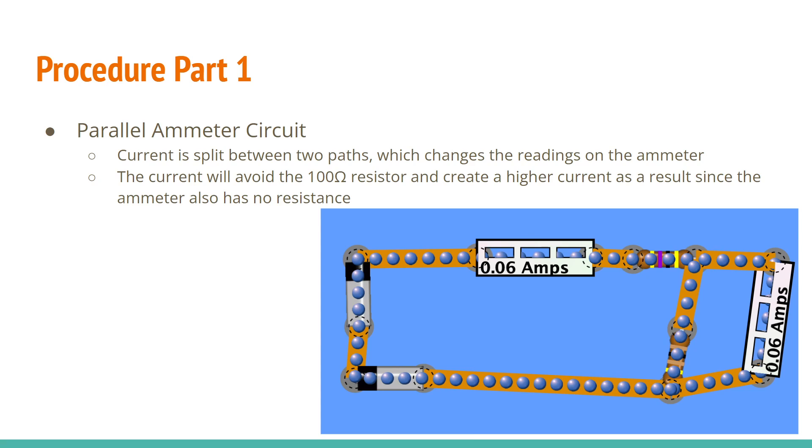The next part called for a parallel ammeter circuit. And so since the current is split between two paths, the ammeter shows a different reading. However, since there is a path to the ammeter without having to take the 100 ohm resistor, it'll create a higher current since the ammeter has no resistance and it just skips the resistor.